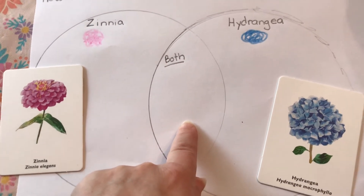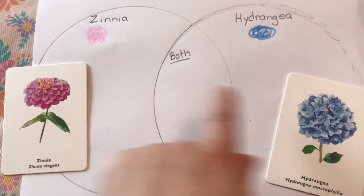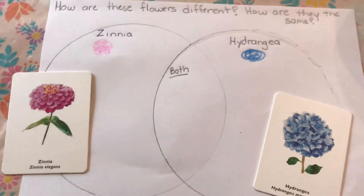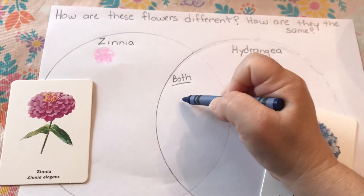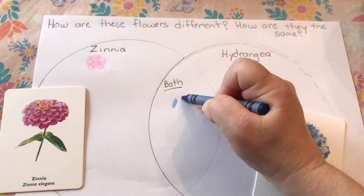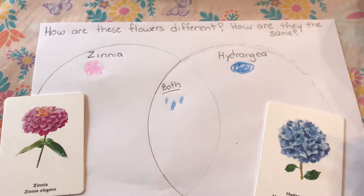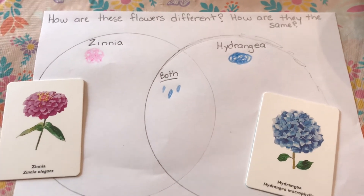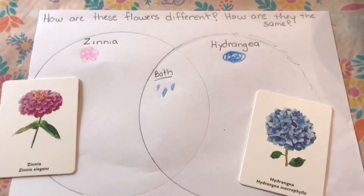In the overlapping section of the Venn diagram, you would record how they are the same. One way these flowers are both the same is that they need rain to grow. The child can draw raindrops here, or you could write the word 'rain.'